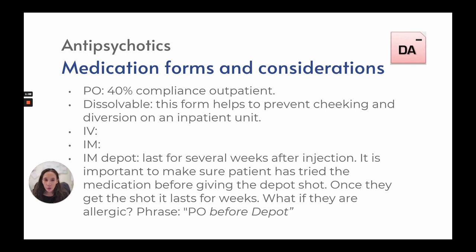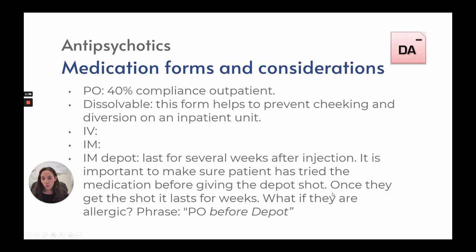Antipsychotic medication forms and considerations: orally, only 40% compliance outpatient — this is why we see repeat patients in treatment centers. Dissolvable forms help prevent cheeking and diversion. They can also be given IV, IM, or as IM Depot, which can last several weeks after injection. It is important to make sure patients have tried the medication in pill form before the Depot shot. Remember: PO before Depot. If a patient is supposed to get a Depot shot, confirm they have taken the pill form first.